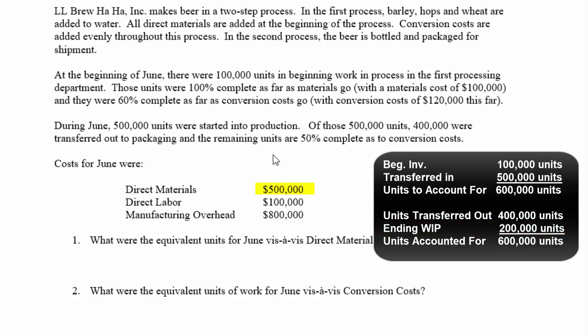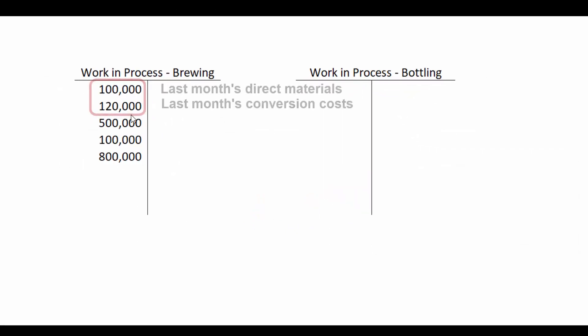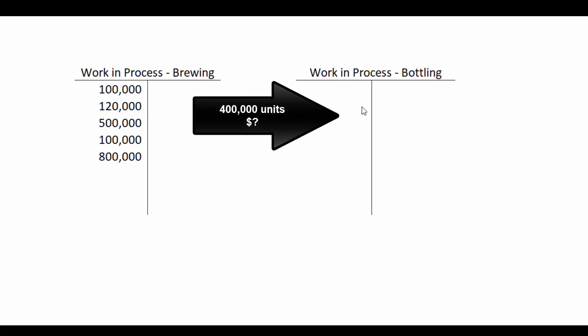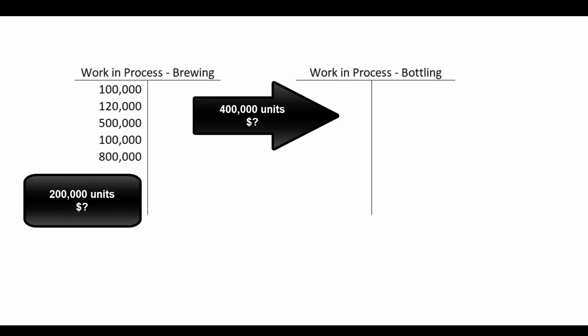Our costs in June are $500,000 for materials, $100,000 for labor, and $800,000 for overhead. In terms of T-accounts, here's our beginning work in process left over from last month: $100,000 for materials and $120,000 for conversion costs. Here's the new cost we added this month: $500,000 for materials and $900,000 for conversion costs. Our job as accountants is to figure out how many dollars moved to work in process bottling with the 400,000 units transferred out, and how many dollars stayed.